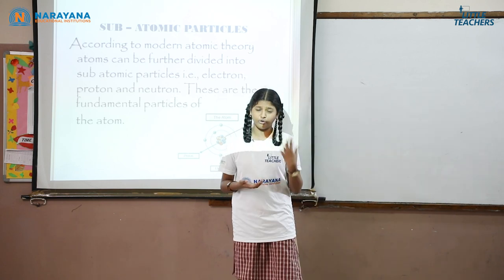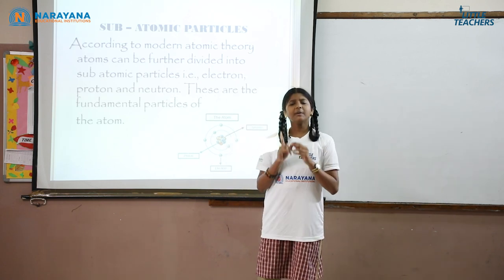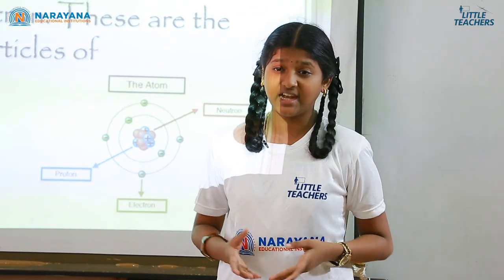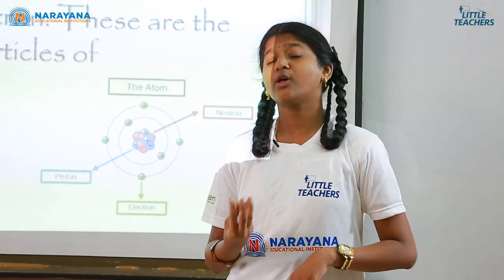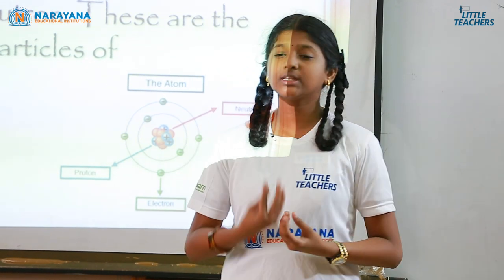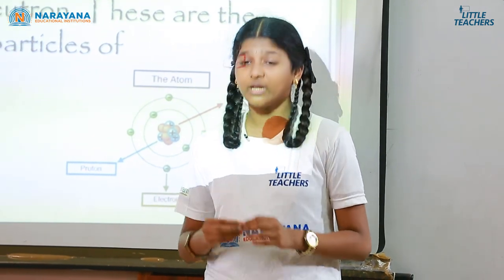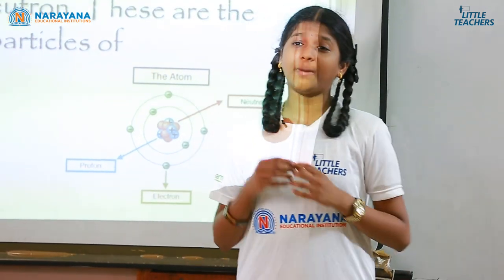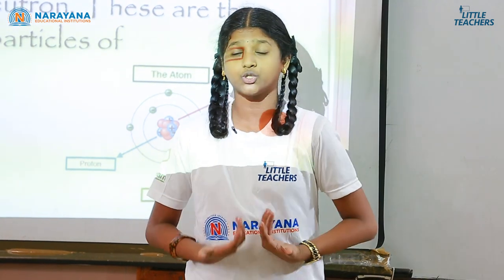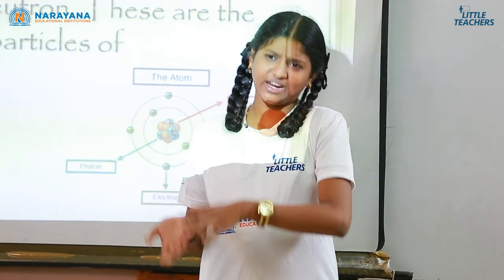An electron is negatively charged and revolves around the nucleus of an atom, which consists of neutrons and protons. Electrons were initially named negatrons by JJ Thompson, which was later changed to electrons by Stoney, meaning the basic unit of electricity.